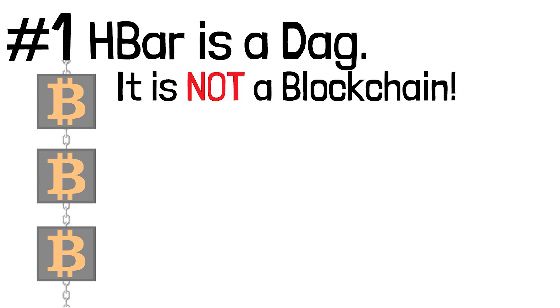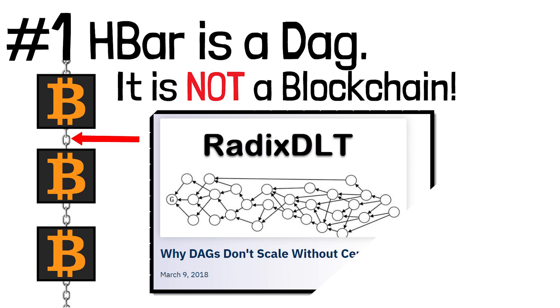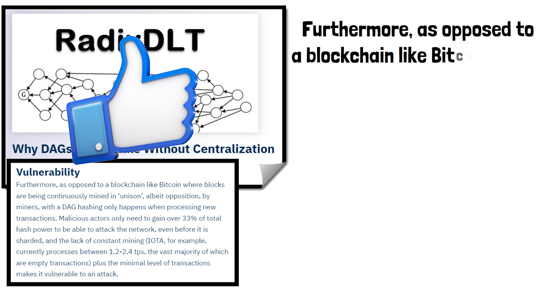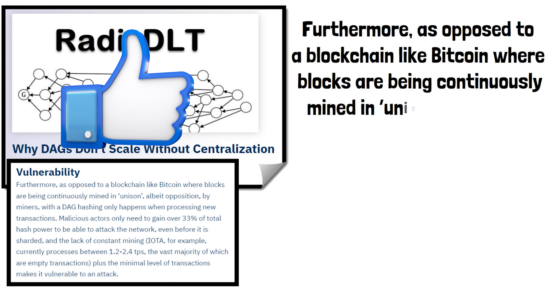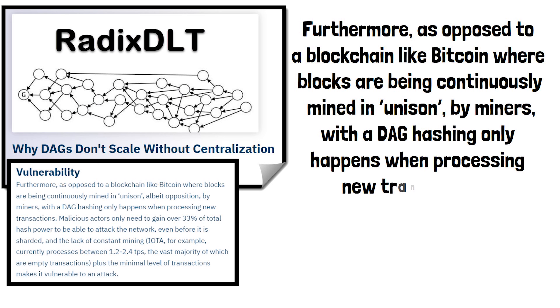Let's start with the fact that HBAR is a DAG. It is not a blockchain, which means that there is no linking of blocks. Let's swing over to Radix DLT and take a look at an article called 'Why DAGs Can't Scale Without Centralization Vulnerability.' As opposed to blockchains like Bitcoin, where blocks are being mined continuously in unison by miners, with a DAG, hashing only happens when processing new transactions.